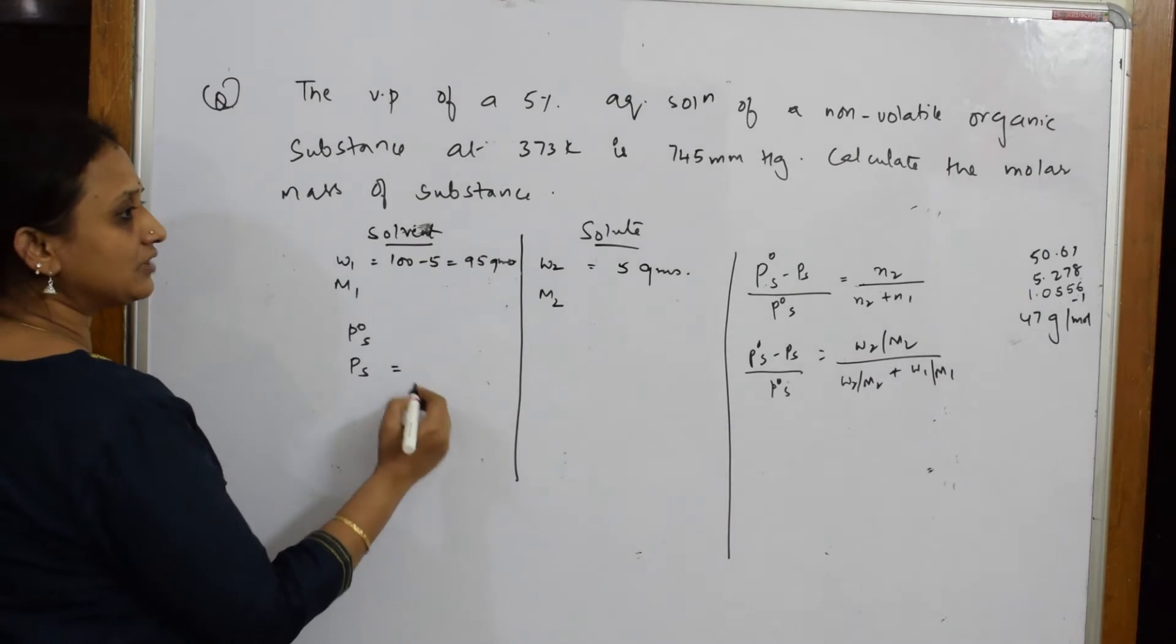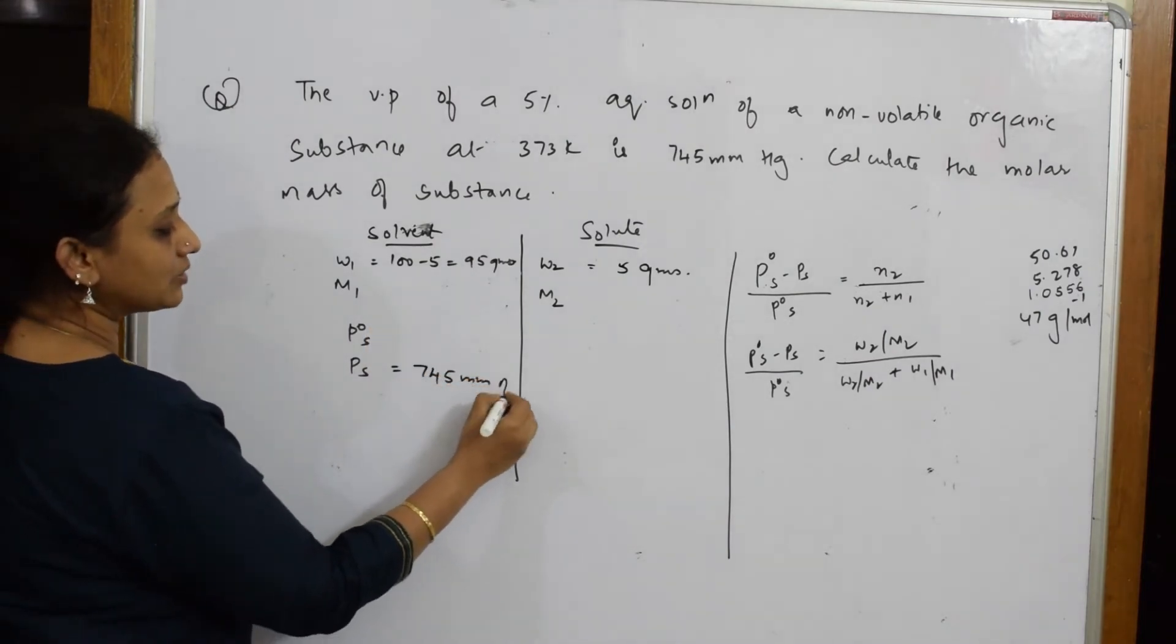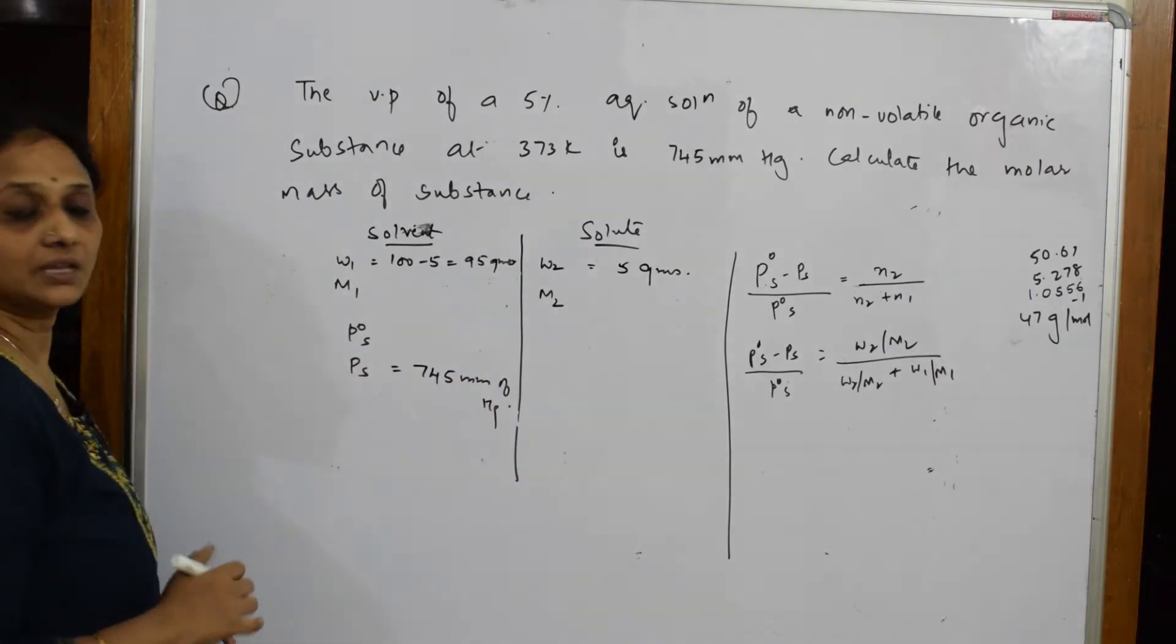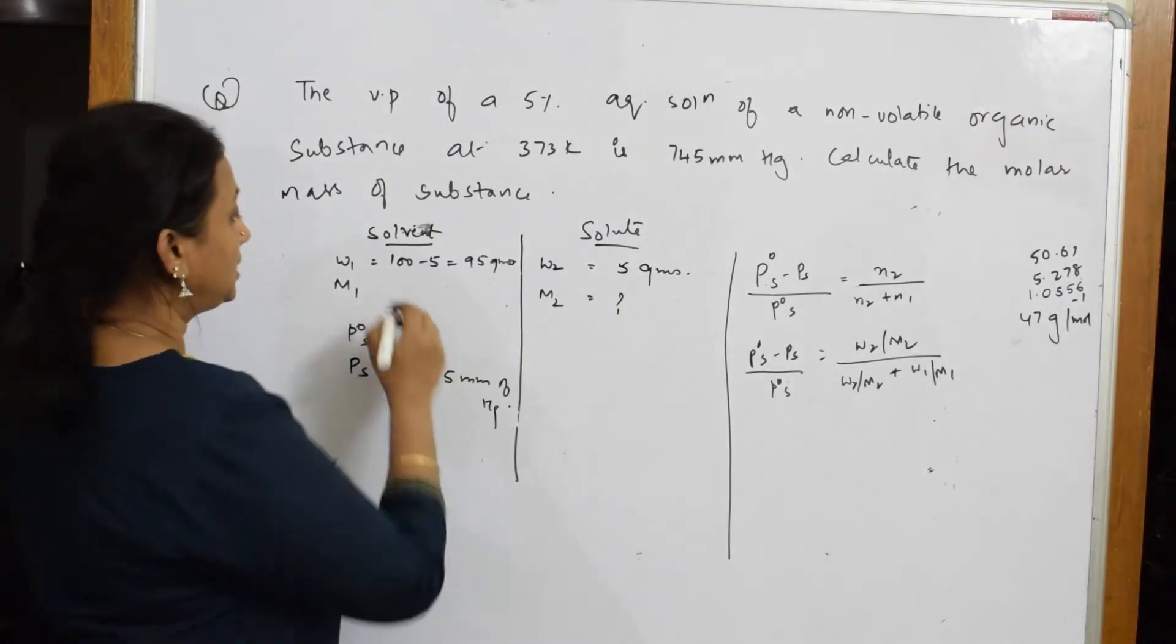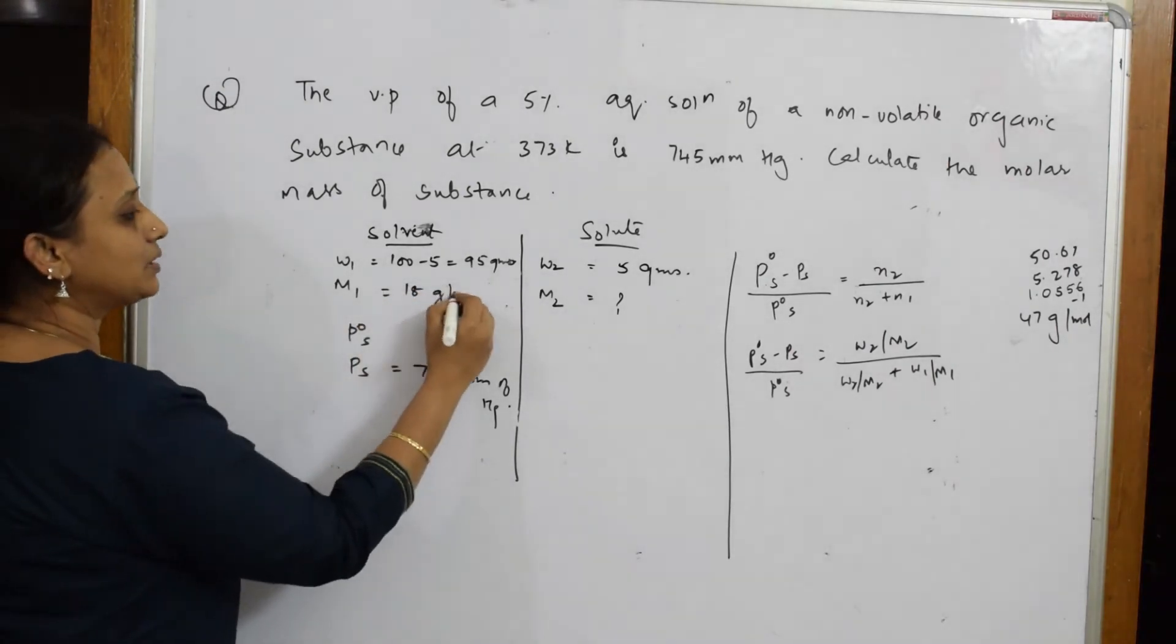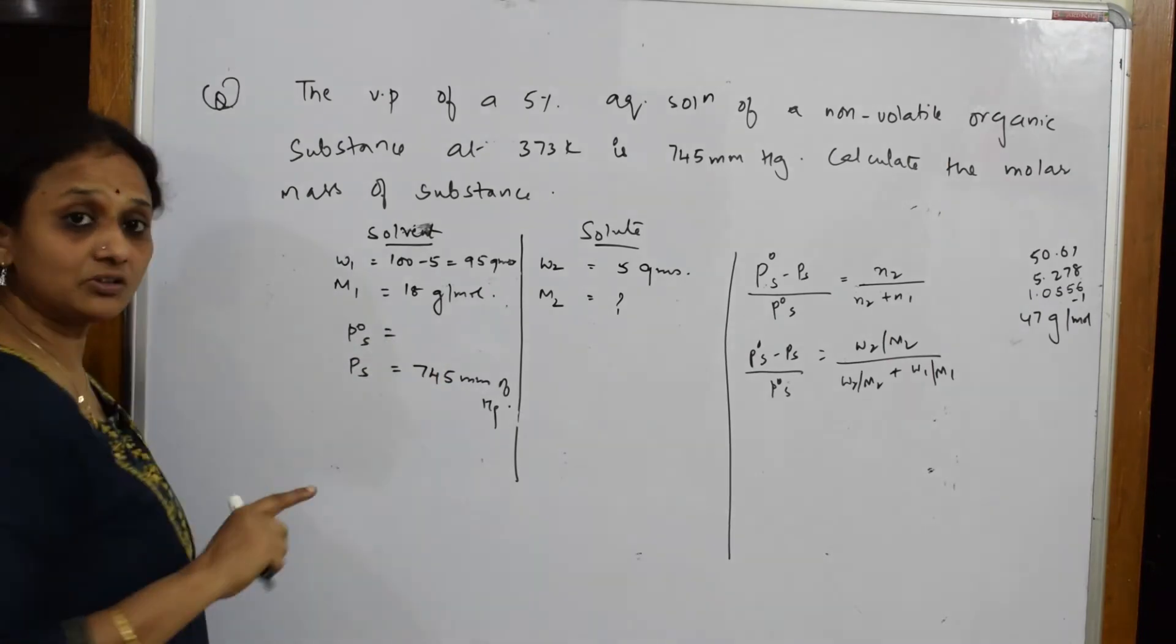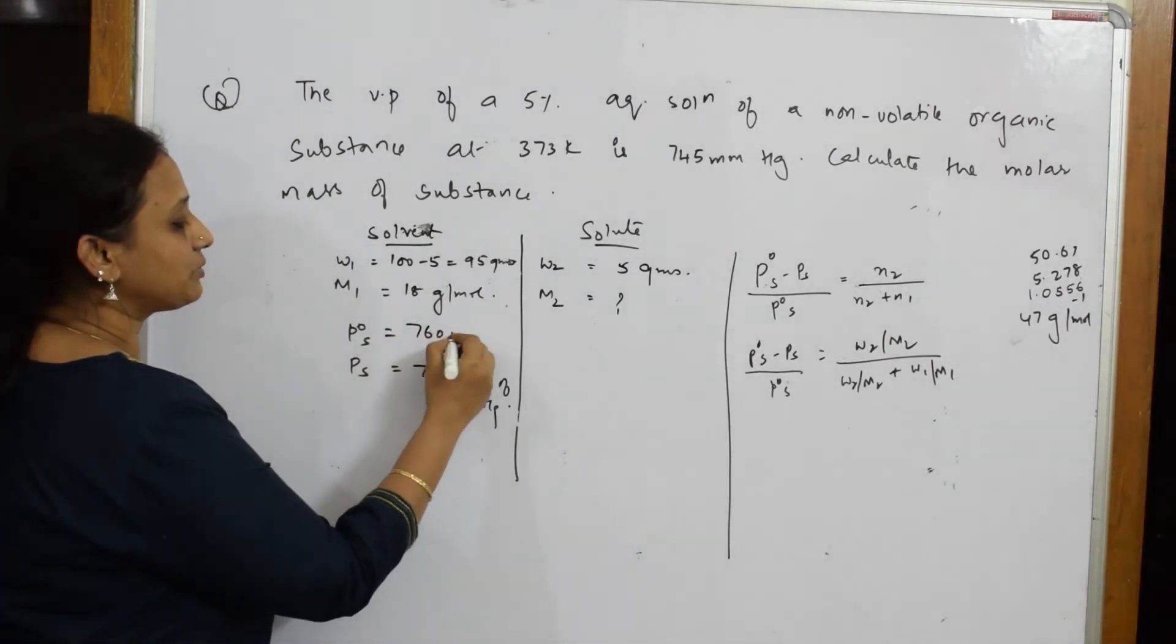So they have given me the vapor pressure of the solution. This is equal to 745 mm of mercury. What should I find out here? I have to find out m2. m1 of the solvent water is nothing but 18 gram per mole. Now what is p0s?